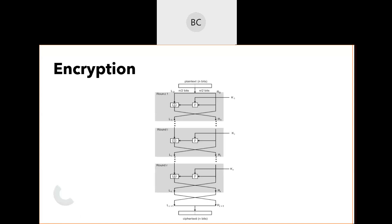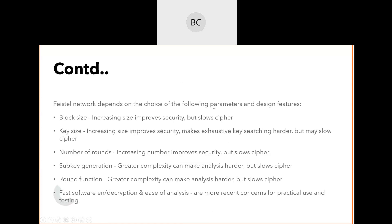We divide the plaintext into two halves, then use each half for different processing rounds. We perform substitution on the left half based on a function of the right half, plus we use some key and perform a round function. If we increase the number of rounds, it will increase security but slow the cipher. Sub-key generation affects the complexity of analysis.